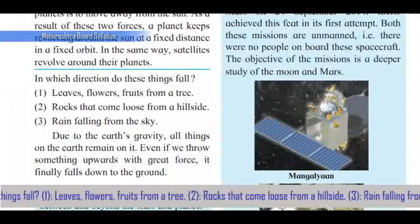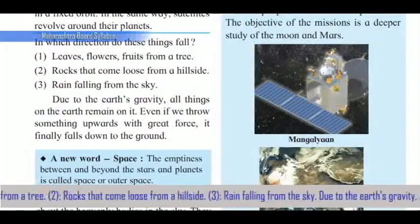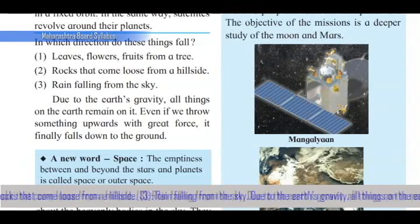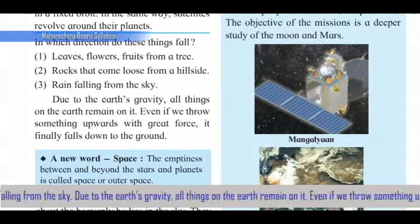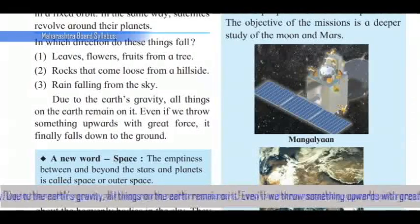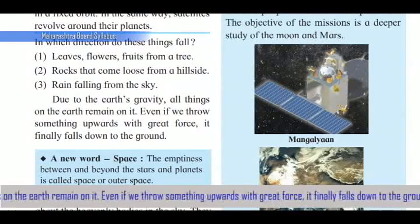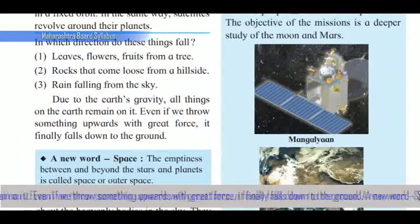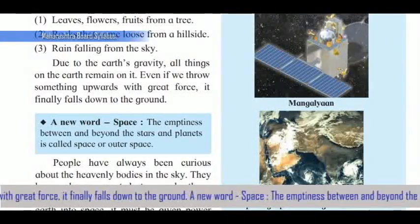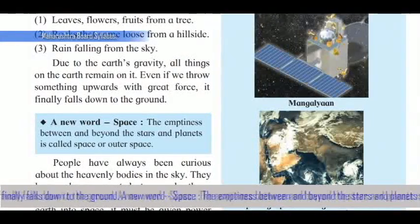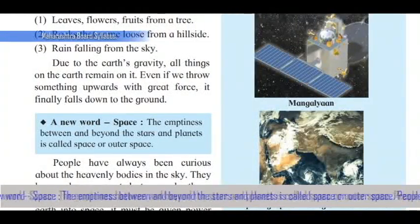In which direction do these things fall? Leaves, flowers, and fruits from a tree; rocks that come loose from a hillside; rain falling from the sky. Due to the Earth's gravity, all things on the Earth remain on it. Even if we throw something upwards with great force, it finally falls down to the ground.